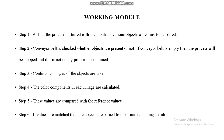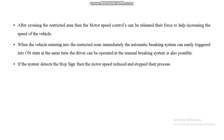The working model starts with various objects as input. The conveyor belt checks whether objects are present using an IR sensor. Continuous images of the objects are taken, color components in each image are calculated, and then compared with reference values. If the values match, objects are directed to tub one, and the remaining objects go to tub two.